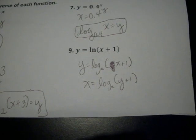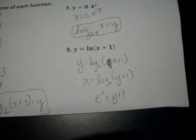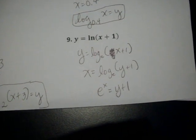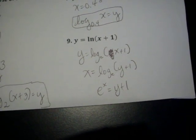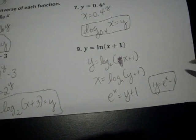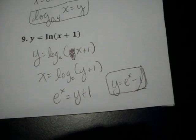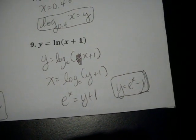Now I'm going to rewrite it into exponential form. And here we do need to solve for Y because of the plus 1. So I'm going to subtract 1. Oops, sorry. On both sides. So I have Y equals E to the X minus 1.